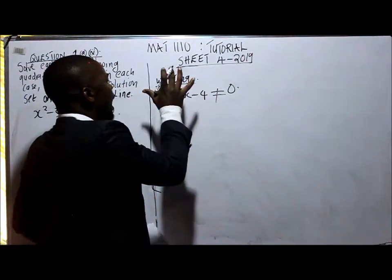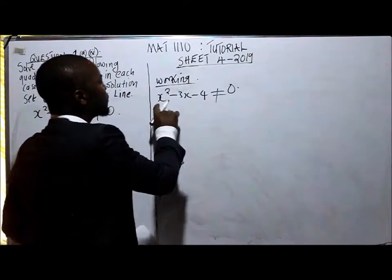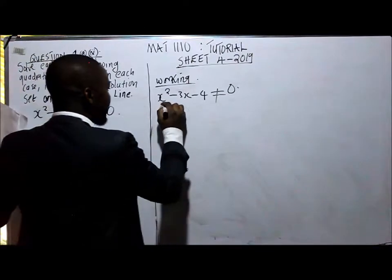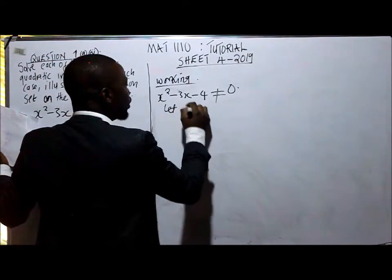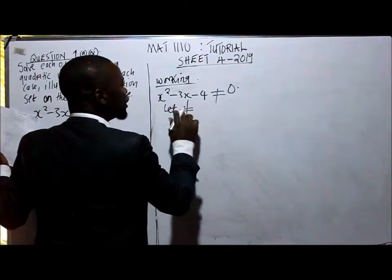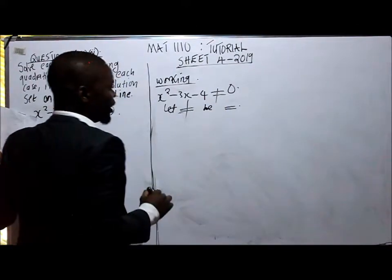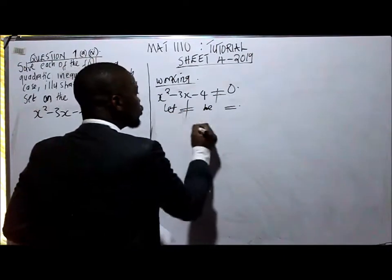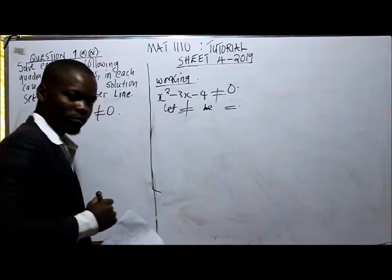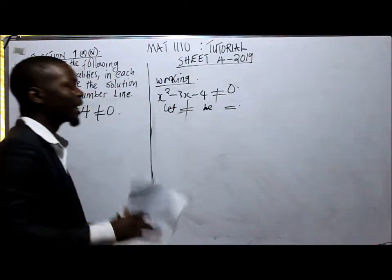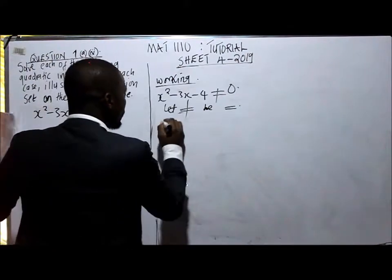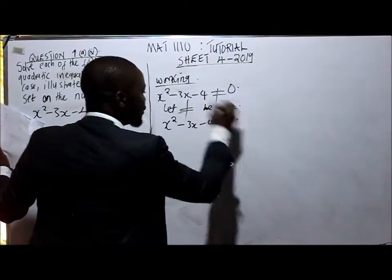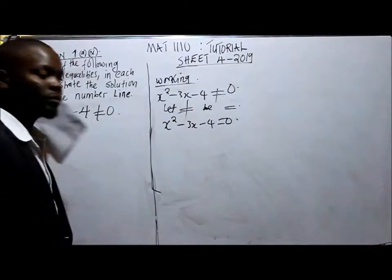So from here, let's first calculate the value of x from this quadratic equation. In short, we are going to say, let not equal to be equal to. Here we are just assuming, let not equal to be equal to. We are doing this so that we can calculate well. So this means that our quadratic equation would be x² - 3x - 4 = 0. From here now we can calculate the variable x.